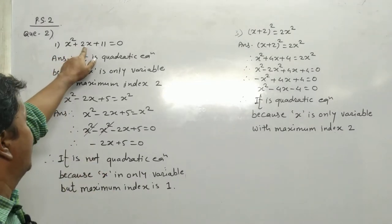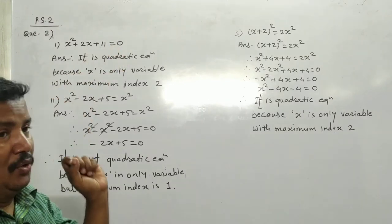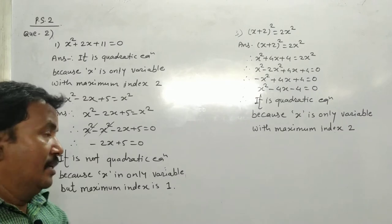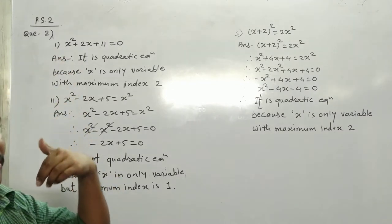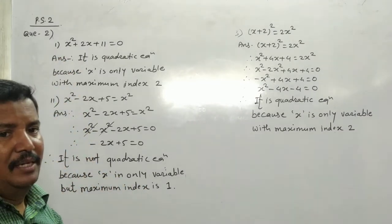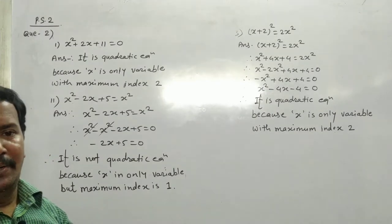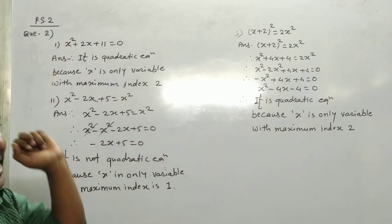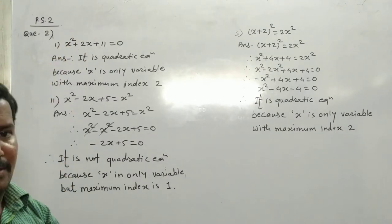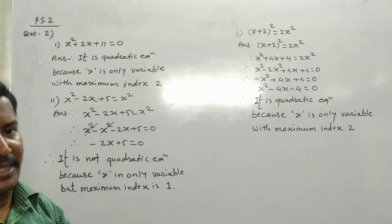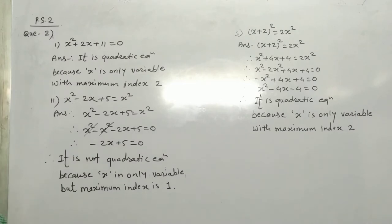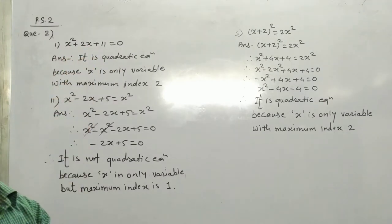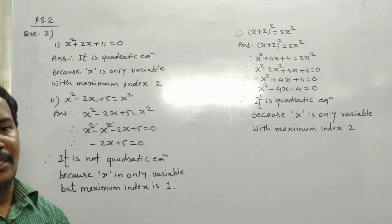The first equation is x² + 2x + 1 = 0. A quadratic equation has the standard form ax² + bx + c. The index must never be a negative number or fraction — it must be a natural number only, and the highest degree must be 2.